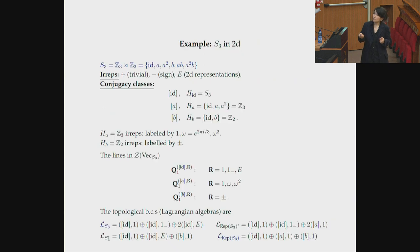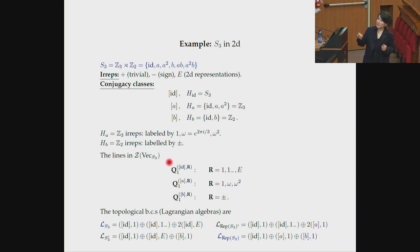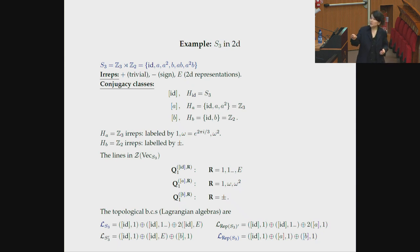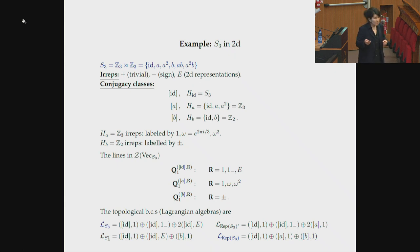In the case of S3 — the simplest example — the group is the semidirect product Z3 ⋊ Z2. The irreps are the trivial, the sign, and the E representation. The conjugacy classes and their representations give the Drinfeld center of Vec(S3). It has specific lines, and one can ask what the gapped boundary conditions are. Indeed, there are four gapped boundary conditions. One gives rise to the Vec(S3) symmetry — a group-like symmetry. Another gives rise to the Rep(S3) symmetry — a non-invertible symmetry. The other two come from particular gaugings, for example Vec(S3) mod Z2.